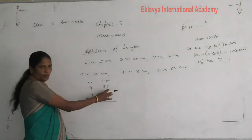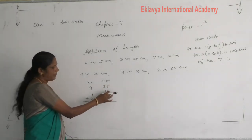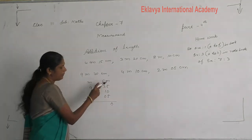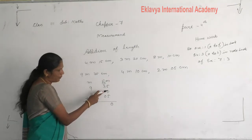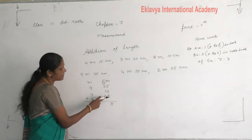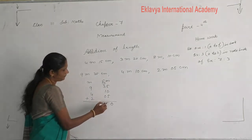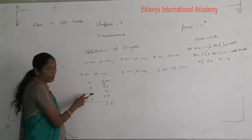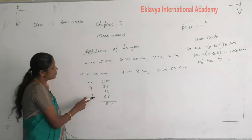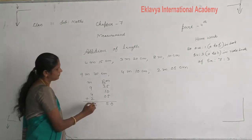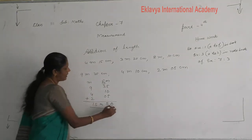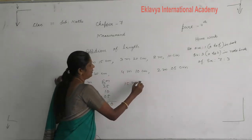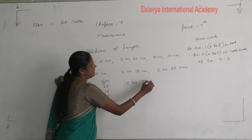5 plus 0 is 5. Then 5 plus 5 is 10 — carry 1. 1 plus 3 is 4, 4 plus 1 carried is 5, 5 plus 0 is 5. Then 9 plus 4 is 13, 13 plus 2 is 15. Our answer is 15 meter 50 centimeter.